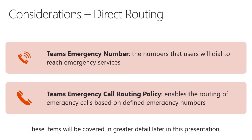From a direct routing perspective, there are additional components that IT administrators need to configure. In addition to configuring location information, we need to instruct Teams how to properly route the emergency call. We do this through a combination of defining a Teams emergency number — the number the user dials to reach emergency services, such as 911 in the US — and a Teams emergency call routing policy that enables routing based on the defined emergency number.